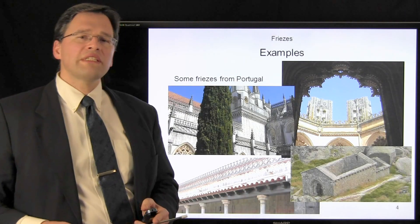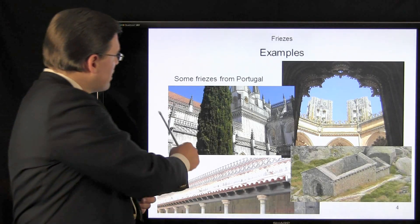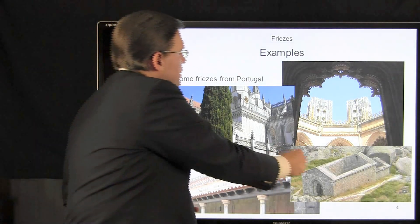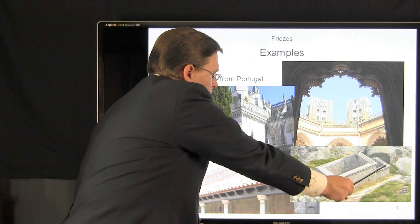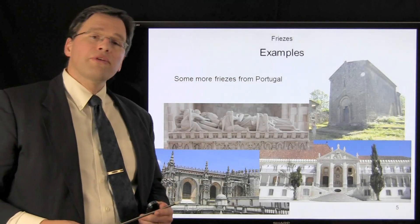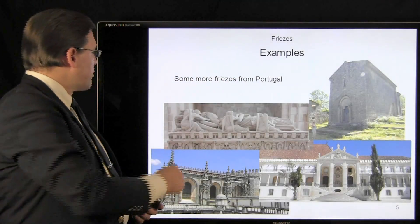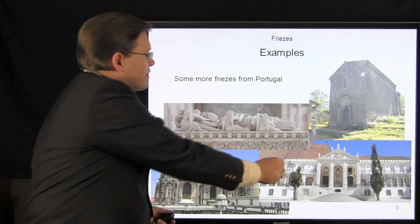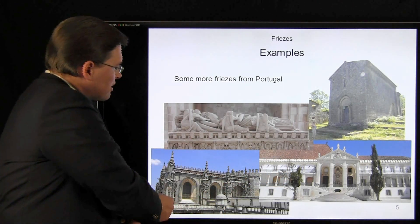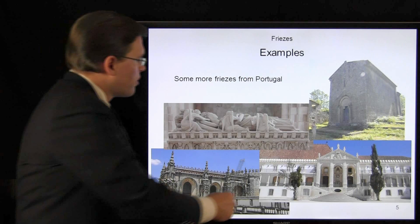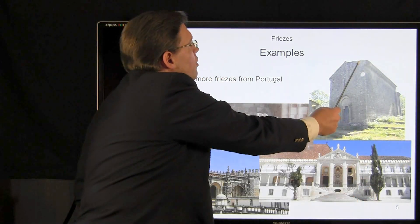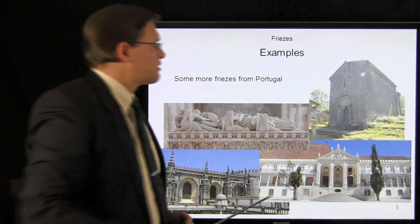Here we see some friezes decorating buildings in Alcobaza, Batalha, and Monsanto. Here are some further friezes: a sarcophagus in Alcobaza decorated with a frieze, friezes at the University of Coimbra, and an old monastery in St. Finns.